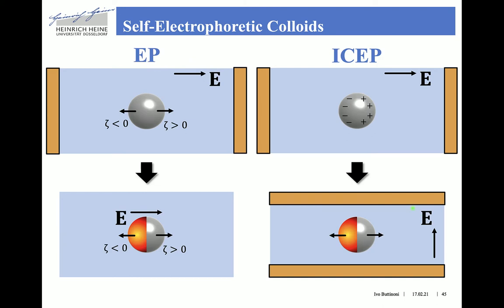These effects can be used to make active colloids that are able to self-propel in one direction or another while an electric field is applied perpendicular to the propulsion motion. It's important to emphasize that we still need an electric field. However, this configuration — where the electric field and the slip velocity are perpendicular — would never lead to any propulsion in the case of classical induced charge electrophoresis and induced charge electroosmosis.